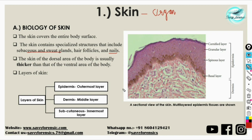Skin of the dorsal area of the body is primarily thicker than the ventral area. The dorsal area is also called the posterior area or the back part of the body, while the ventral area is the anterior portion or the front part of the body.